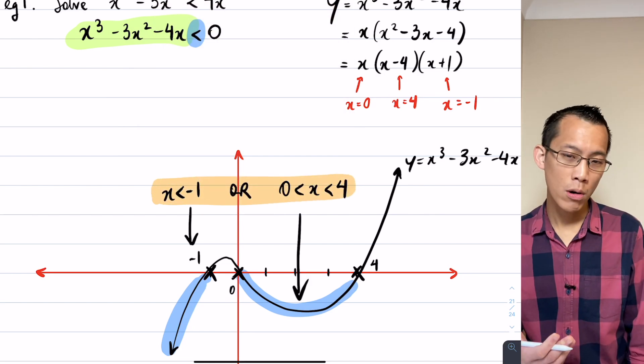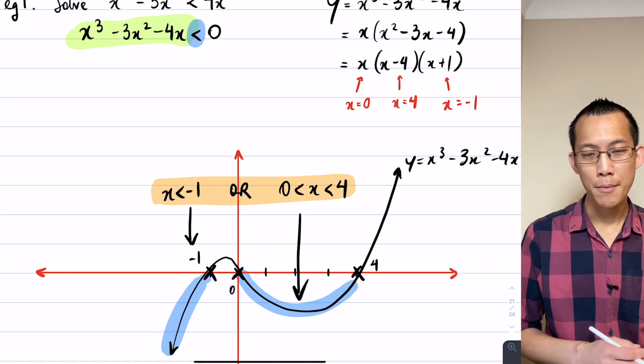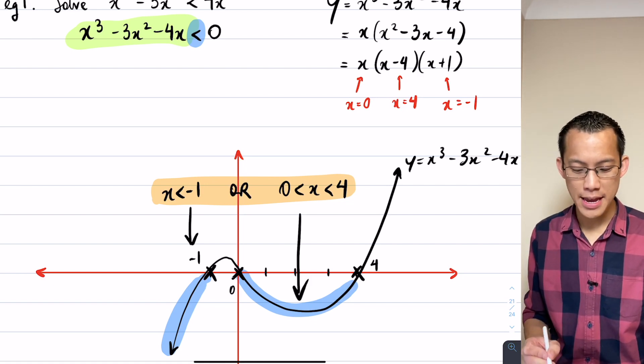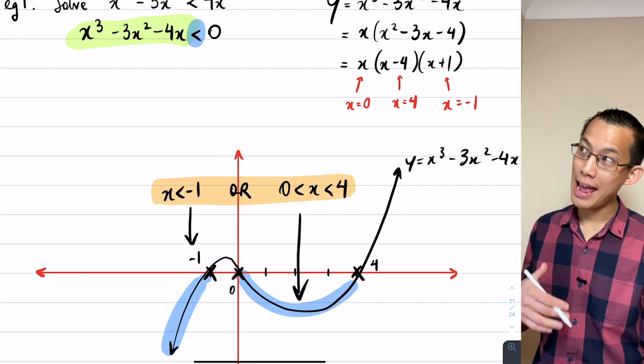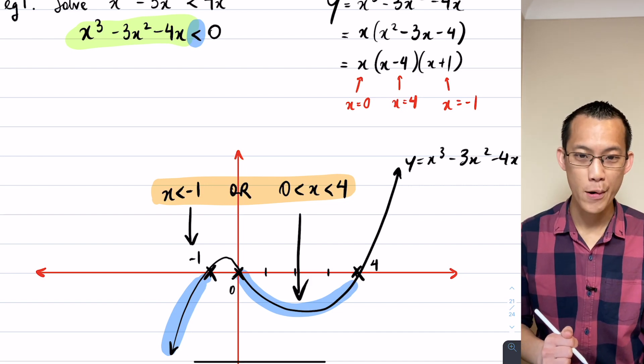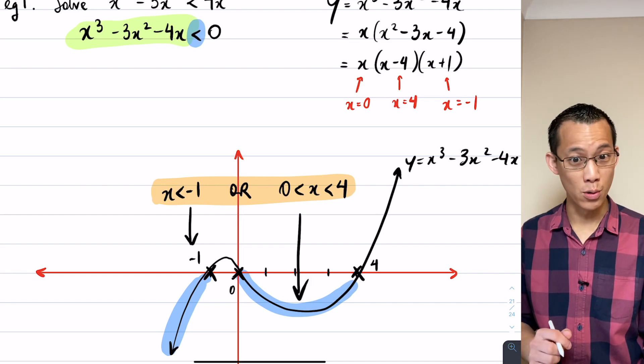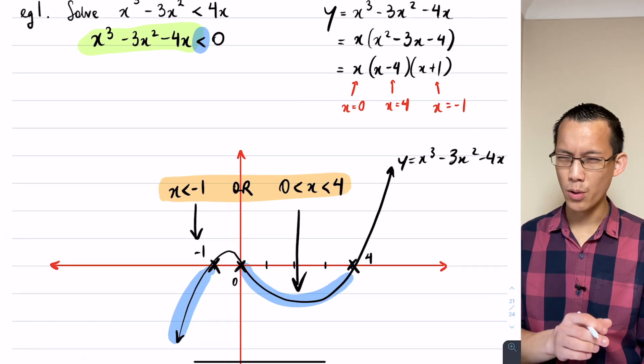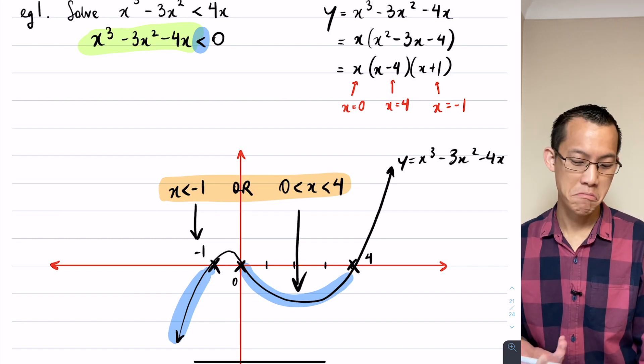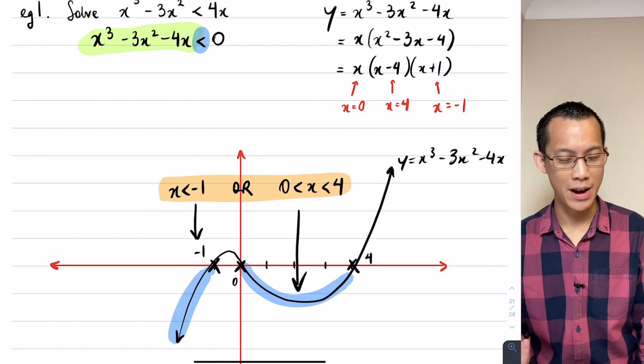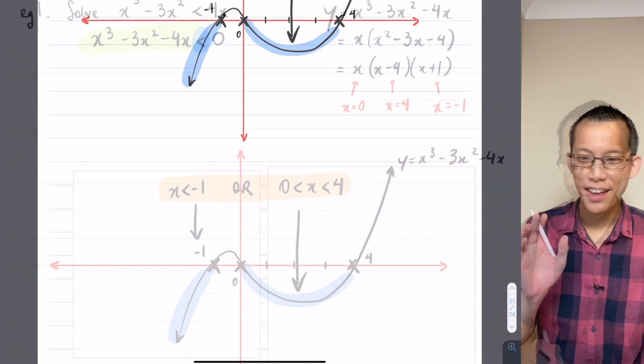There is my answer right there. I'll just highlight it in orange, so you can see it really clearly. And I use the word or rather than the word and, because there's no x value that can be less than negative 1, and also simultaneously between 0 and 4. You're either one or the other. So that's why I use the word or rather than and, and I use the word or rather than a comma, because a comma makes it ambiguous whether you mean or or and. Just a minor point there.